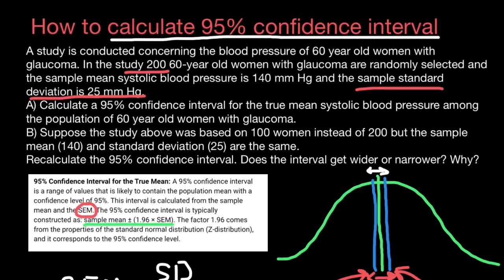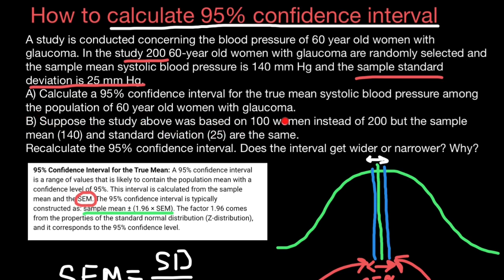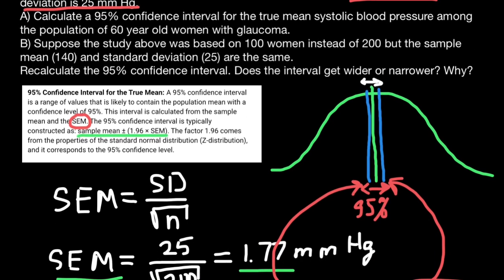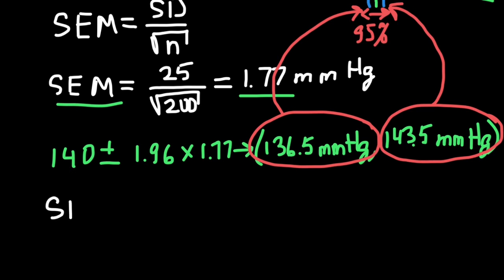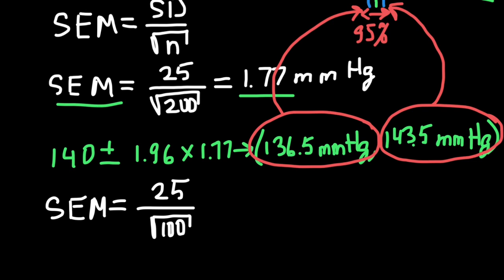Now let's return to part B. Suppose the study above was based on 100 women instead of 200, but the sample mean is still 140 and the standard deviation is also the same — 25 millimeters of mercury. Recalculate the 95% confidence interval. Does the interval get wider or narrower, and why? Again, our first step is to calculate the standard error of the mean: 25 divided by the square root of 100. This time we get 2.5 millimeters of mercury.